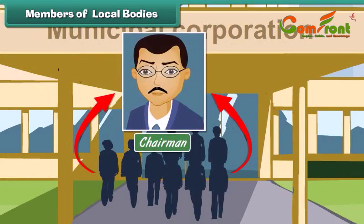The elected members of a municipal committee or corporation elect their chairman. In big cities the chairman is called the mayor. He is the head of a municipal committee or corporation.